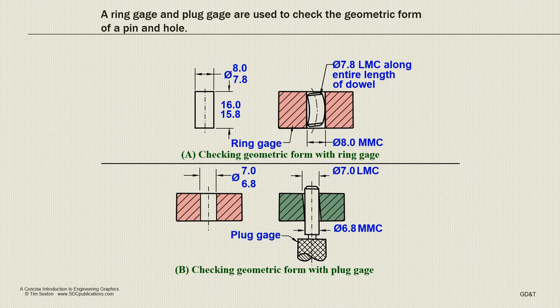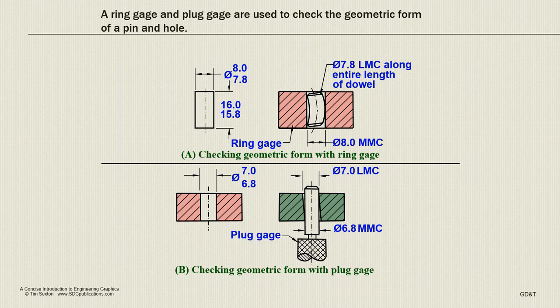The hole we can check. Here we have a plug gauge at 6.8, so this plug gauge held perpendicular to the hole, if it fits all the way through, then the part, the hole, should be okay as long as it doesn't ever go over its 7.0 upper limit.